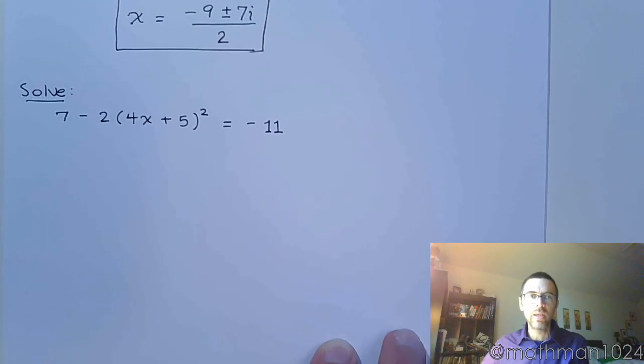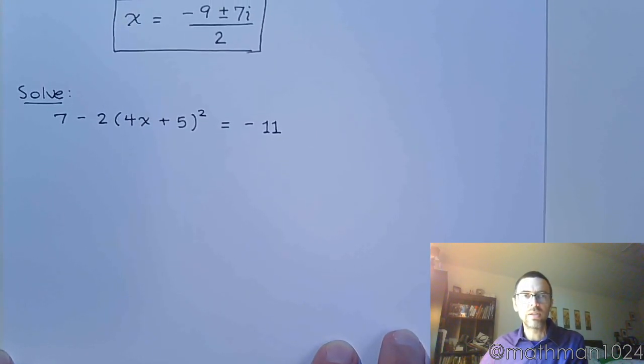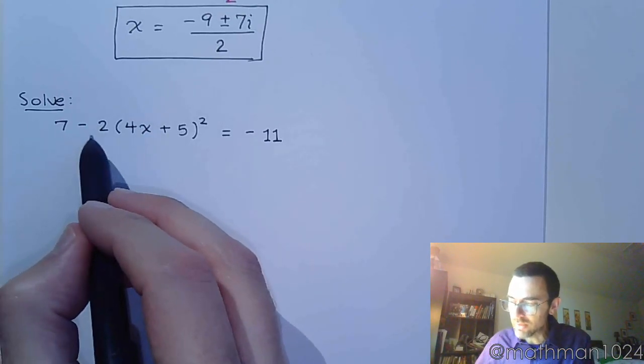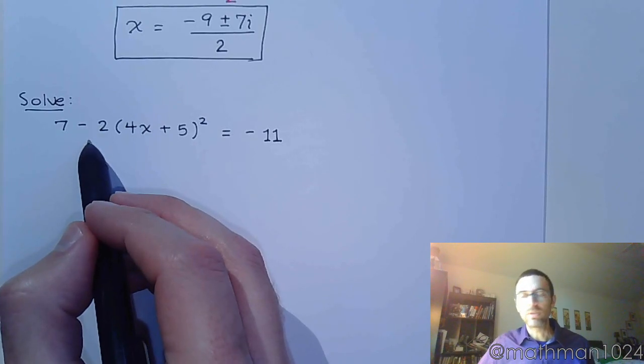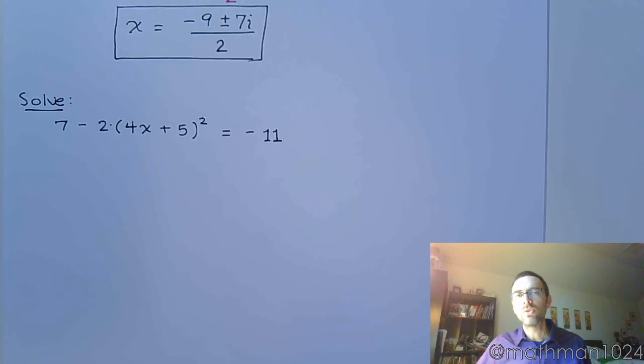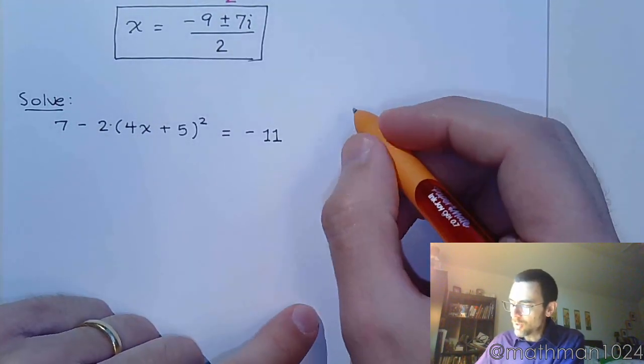All right, one more guy. Let's look at solving 7 - 2(4x + 5)² = -11. Be careful - 7 and 2 cannot subtract because the 2 is connected by multiplication to that set of parentheses, to that group.